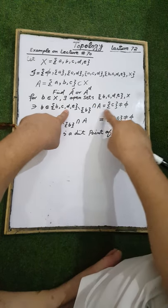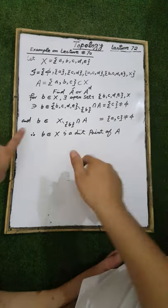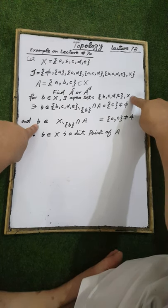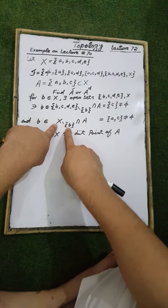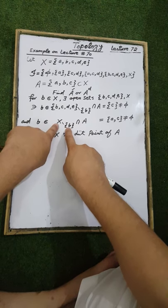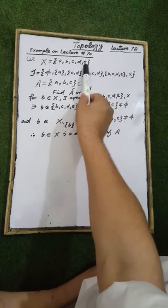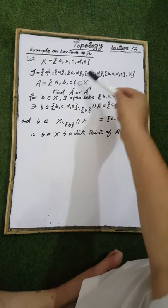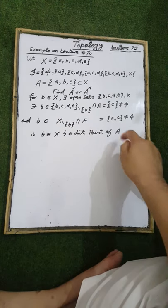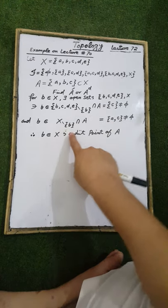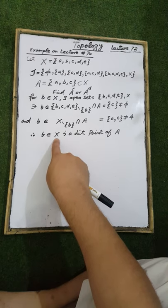Similarly, for b belonging to another open set X minus the set containing b, the remaining elements are a, c, d, e, and the intersection with A — the elements common to {a, c, d, e} and A = {a, b, c} are the elements a and c — which is a non-empty set. Therefore, the element b belonging to the ground set X is a limit point or accumulation point of the set A.